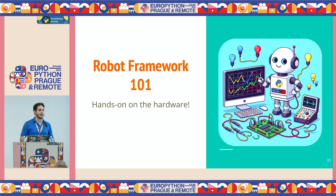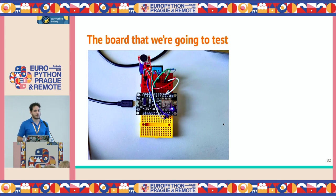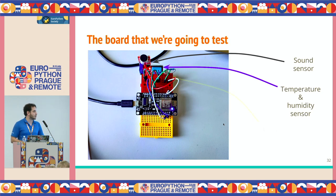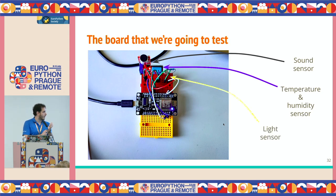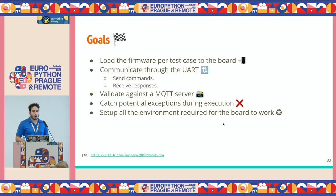Now let's introduce the hardware and see how we can combine all these keyword things with hardware. This is the board we are going to test — the ESP8266. It's quite a simple board. We have some sensors connected: a temperature and humidity sensor, and a light sensor. This board was developed during the COVID pandemic, and it serves to detect how many people are in a room by combining all the sensors.